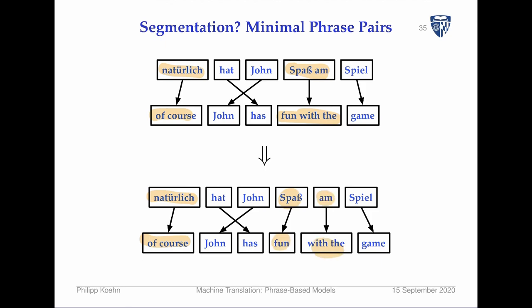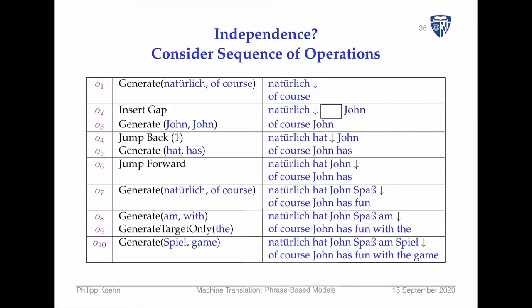By looking at the word alignment within phrase pairs and asking 'can we break it up into smaller pieces?' — it doesn't necessarily end up as one-to-one mappings; it could still have two-to-two mappings if there's some unusual alignment. This just kind of reduces context, and now we sneak context back in again in a more complicated way.